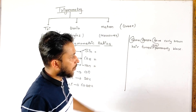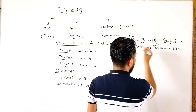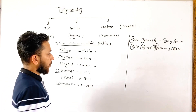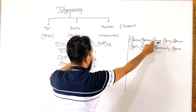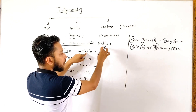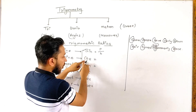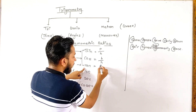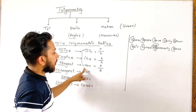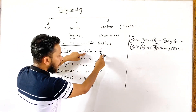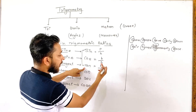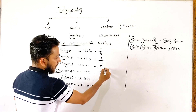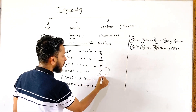For all six trigonometric ratios, we use the same mnemonic sentence: 'Some People Have Curly Brown Hair, Ton, Permanently Black.' This sentence encodes the formulas for sine, cosine, tangent, cotangent, secant, and cosecant in terms of hypotenuse, perpendicular, and base.